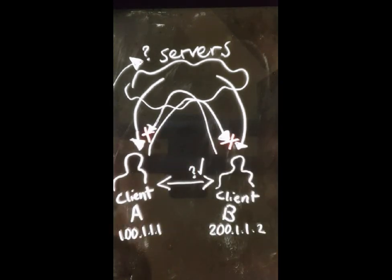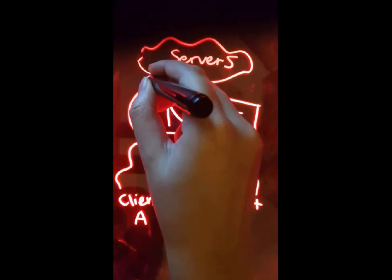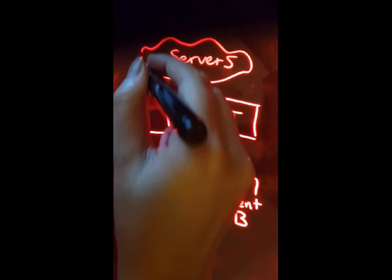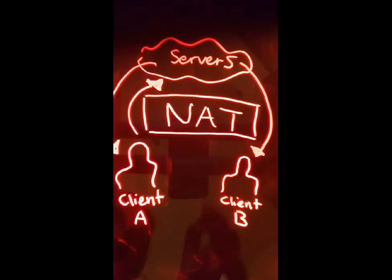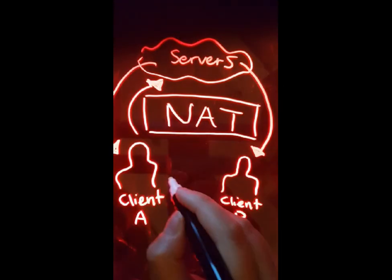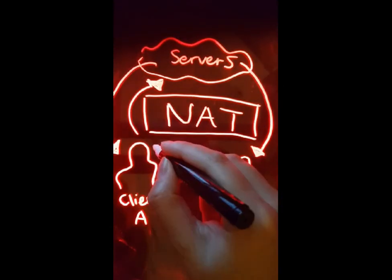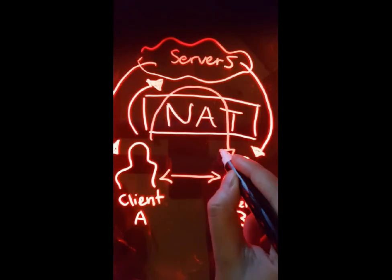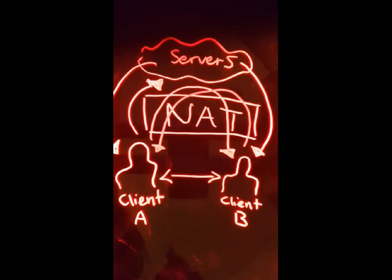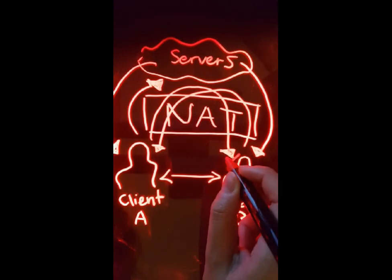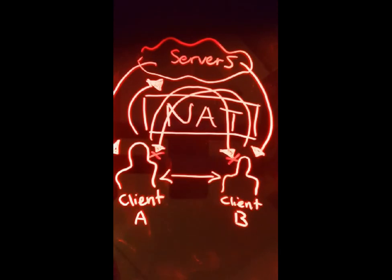A will thereby no longer send packets to the slower or non-responding endpoint as a faster connection is already established. A and B now have an ongoing peer-to-peer connection. If there is just one NAT with both clients within the NAT, then the process will end up connecting clients directly through their private IP addresses, as a connection made privately would be faster than responding through a NAT.